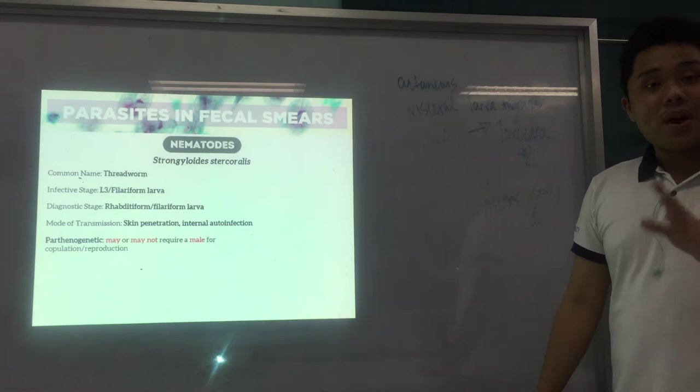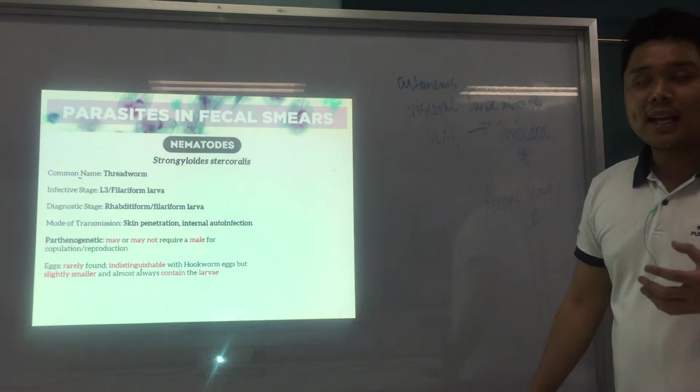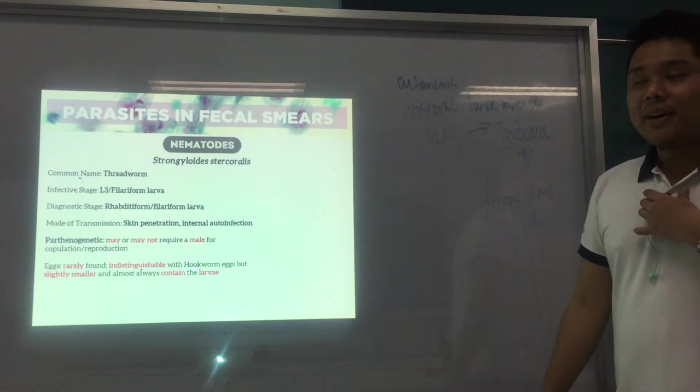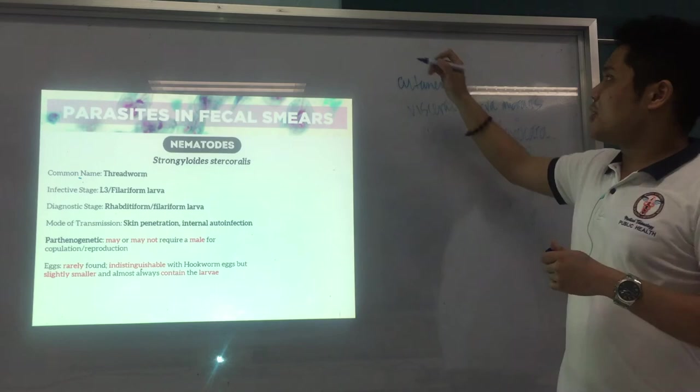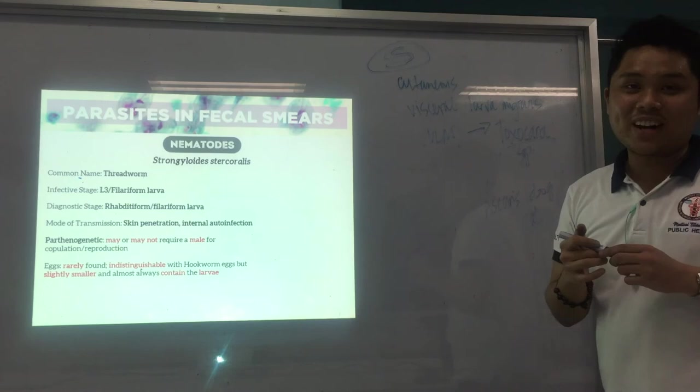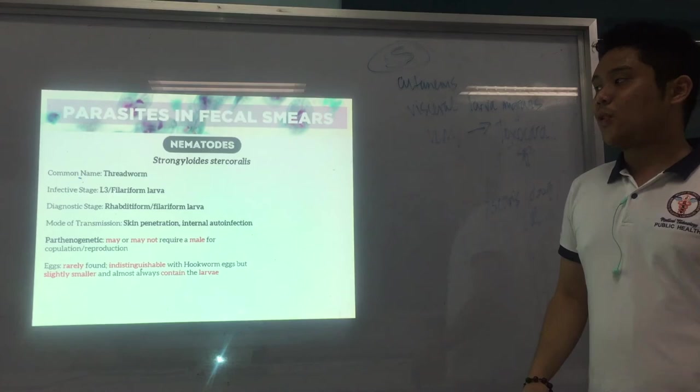For Strongyloides, the eggs are rarely seen, but if you see them, they are indistinguishable from hookworm eggs — just slightly smaller and always containing a developing larva inside. Because eggs are rarely seen, the diagnostic stage for Strongyloides is the larva, not the egg. The mode of transmission is skin penetration, same as hookworm, or can be auto-infection.